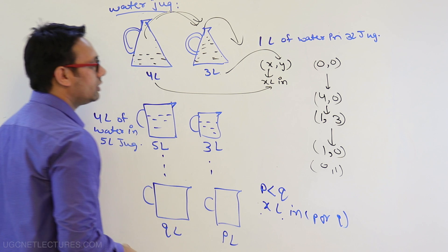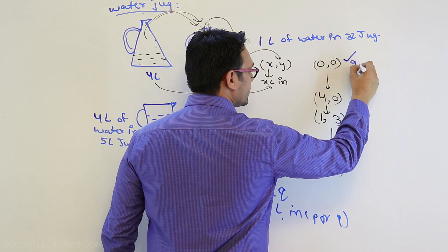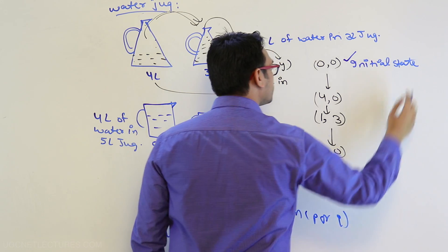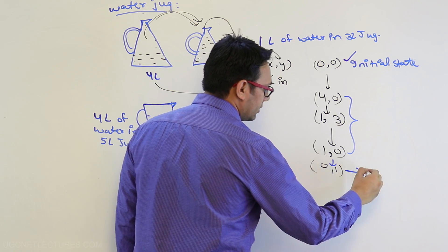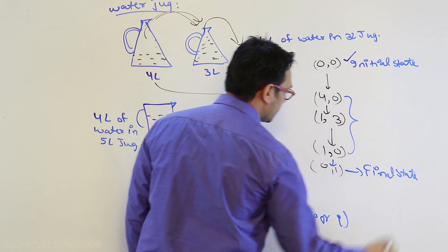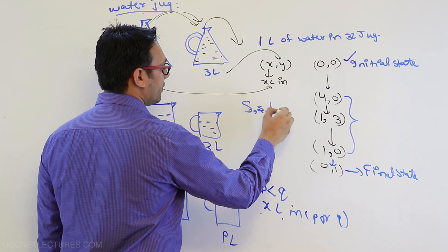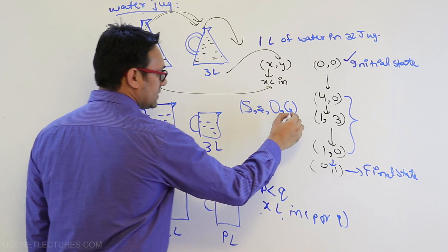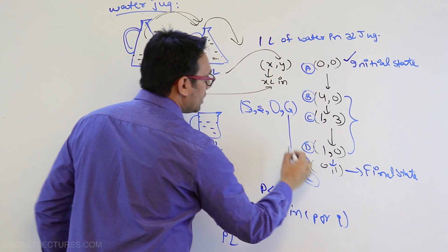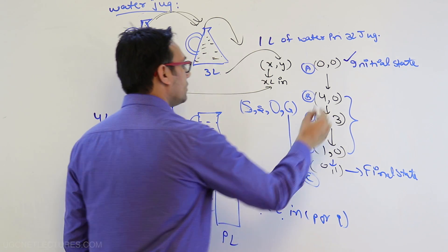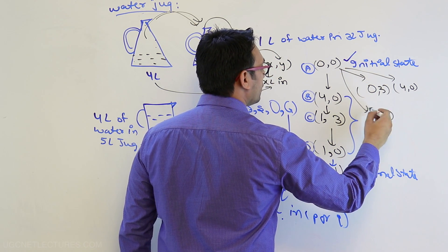Then you pour the one liter of water from the first jug into the three liter jug, giving state (0, 1). This is the final goal state — one liter of water in the three liter jug. So the initial state is (0, 0), these are the intermediate states, and (0, 1) is the final state.